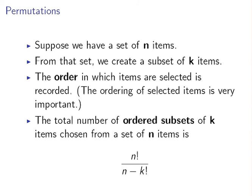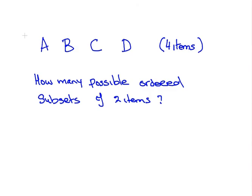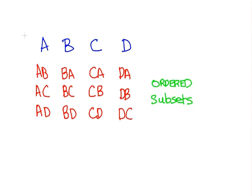So let's look at an example. Suppose I have four items I'm going to call them A, B, C and D. I want to find out how many possible ordered subsets there are of two items. In this particular instance we can write them all out because we have nice manageable numbers like two and four. So here we have them there.